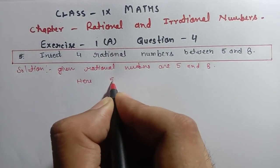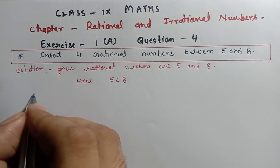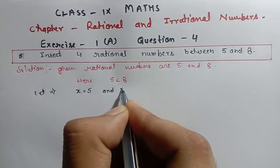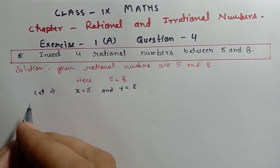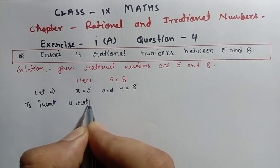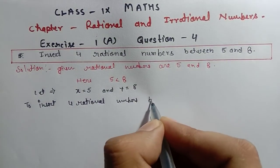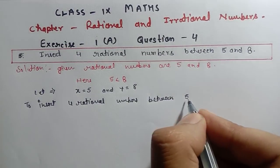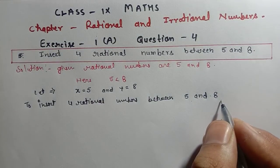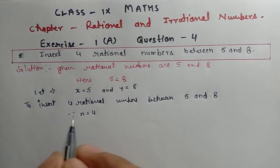Now see here, 5 is less than 8. So we let x equals to 5 and y equals to 8. To insert 4 rational numbers between 5 and 8, n equals to 4, because we have to insert 4 rational numbers.